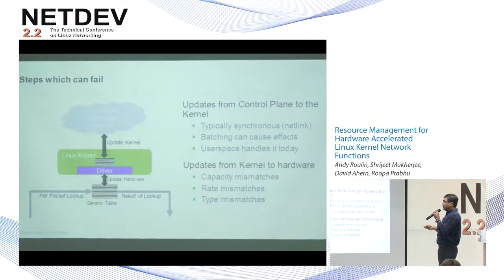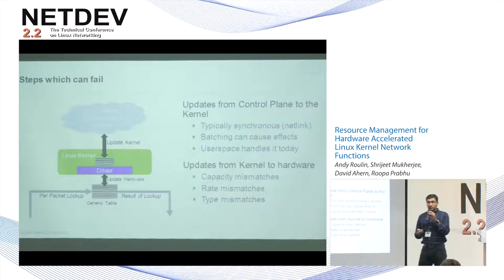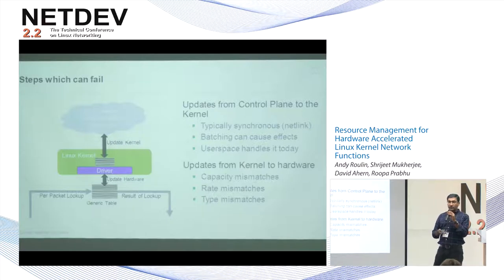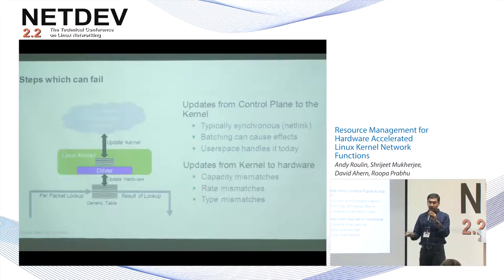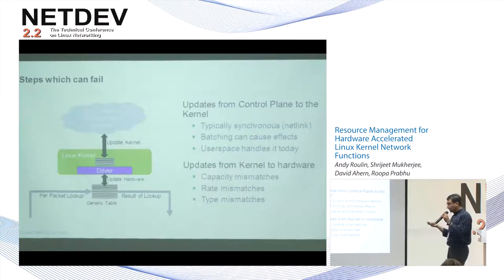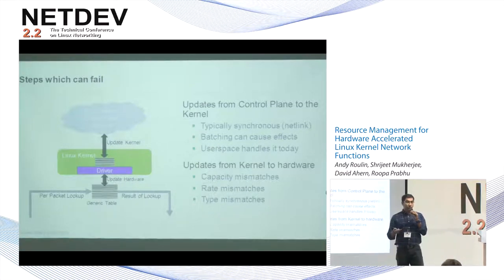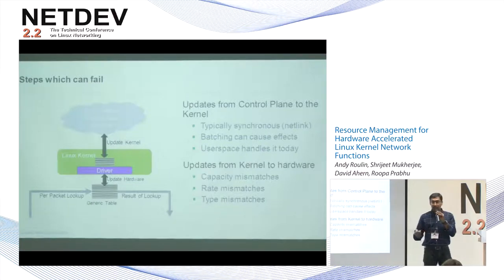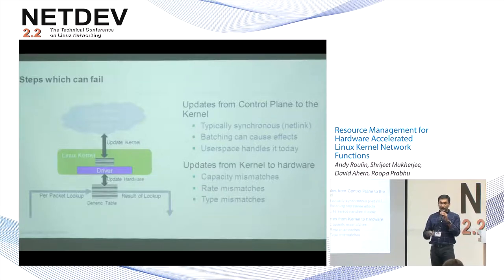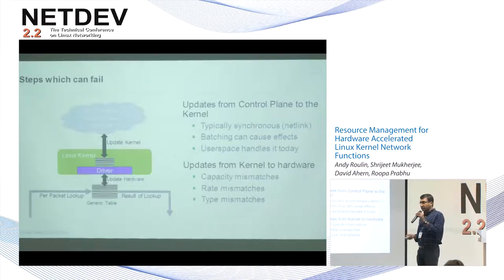What are the steps in this model that can fail? Typically updates from the control plane to the kernel are synchronous — via ETH tool, netlink commands, and so forth — and the caller expects to know right then whether the callee can support the call. Batching has effects: for efficiency you almost always want to send N number of something to the kernel, and if one out of N fails and the failure happens in the middle, how do you signal? Do you roll back the whole thing or selectively fail some?